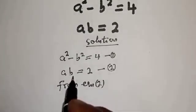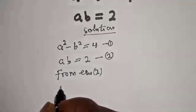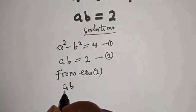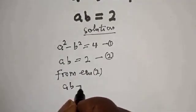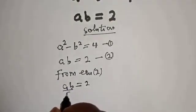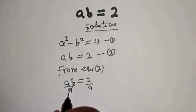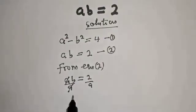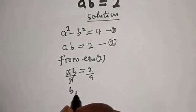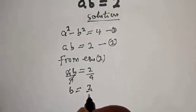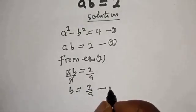From equation 2, let's make b the subject of the formula. Therefore ab equals 2; dividing both sides by a gives b is equal to 2 over a. Let's call this equation star.